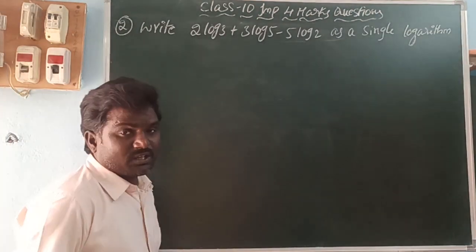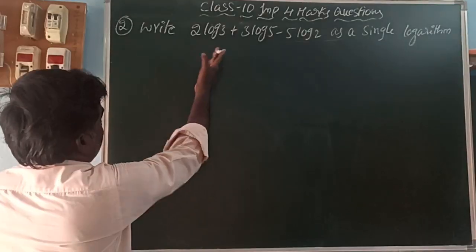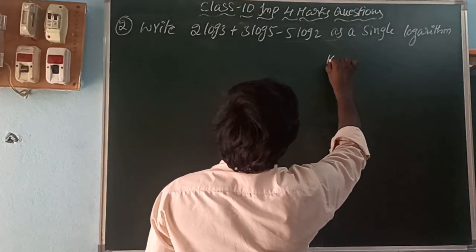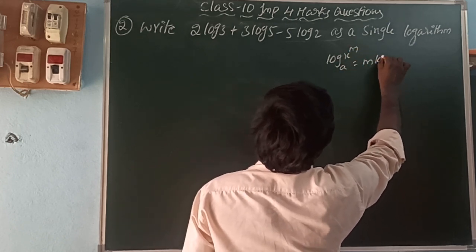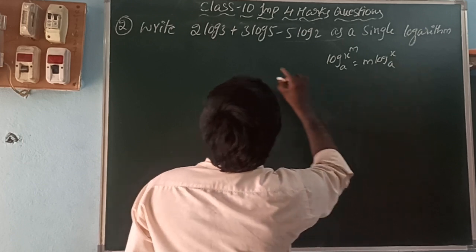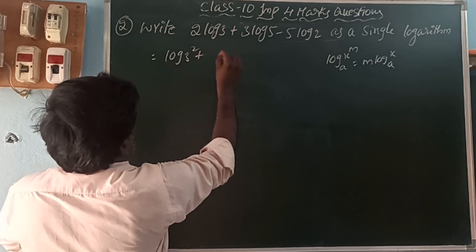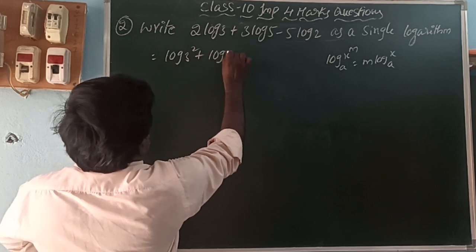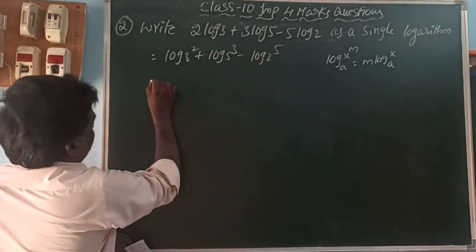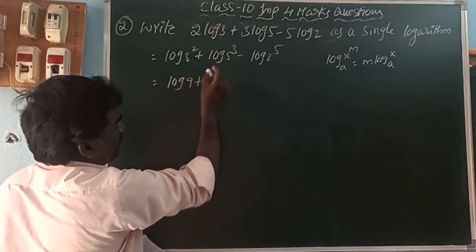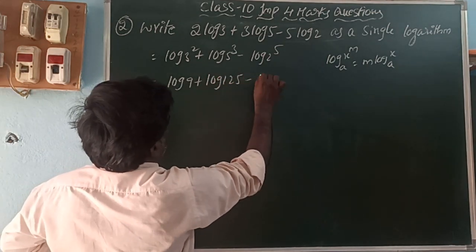Next question: express 2log3 + 3log5 - 5log2 as a single logarithm. Using the log power rule, log x^m = m·log x, we can write 2log3 as log(3²), 3log5 as log(5³), and 5log2 as log(2⁵). So we have log9, log125, and log32.